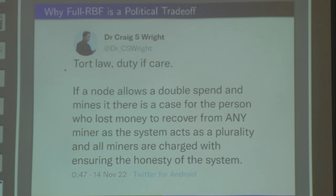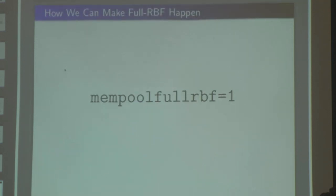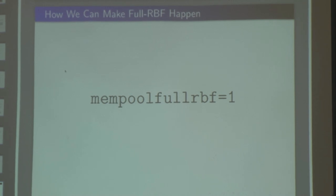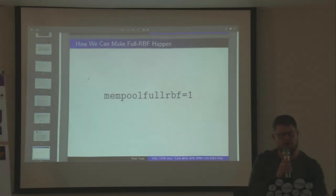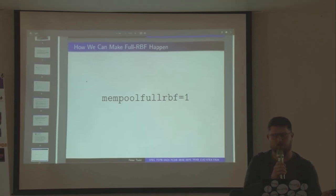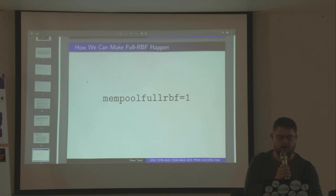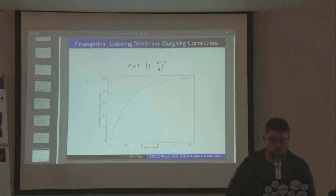So if you agree with me, how do you make it happen? In Bitcoin version 24.0, you add that option to bitcoin.conf and you'll start applying full RBF — simple as that. If you use Bitcoin Knots, Luke told me it's had full RBF enabled by default for about three or four years now.